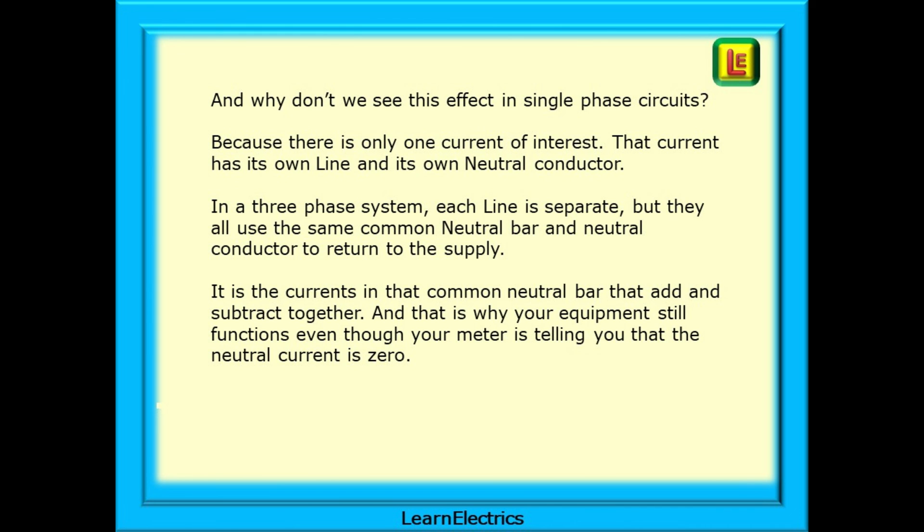And why don't we see this effect in single-phase circuits? That is because there is only one current of interest to us. That single current, that single phase, has its own line and its own neutral conductors. In a three-phase system, each line is separate, but they all use the same common neutral conductors. It is the current in that common neutral bar that add and subtract together. And that is why your equipment still functions, even though your meter is telling you that the neutral current is zero. The current is there, but it is being balanced out by Kirchhoff's law.